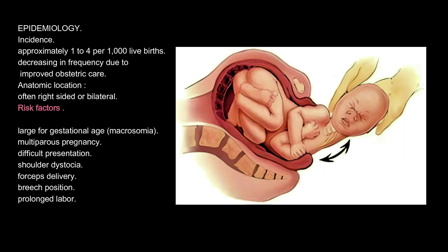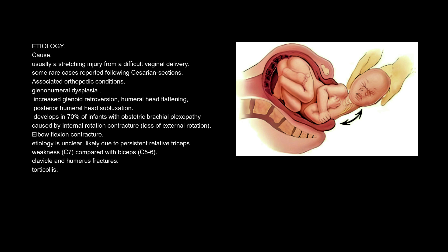Epidemiology: Incidence is approximately 1 to 4 per 1,000 live births, decreasing in frequency due to improved obstetric care. Anatomic location is often right-sided or bilateral. Risk factors include large for gestational age, macrosomia, multiparous pregnancy, difficult presentation, shoulder dystocia, forceps delivery, breech position, and prolonged labor. The cause is usually a stretching injury from a difficult vaginal delivery, with some rare cases reported following cesarean sections.